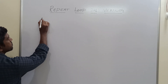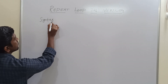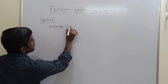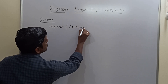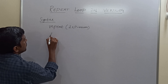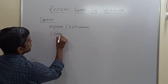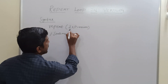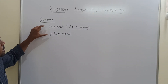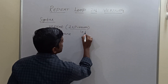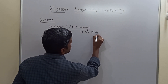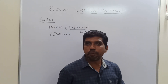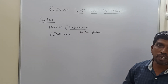First I will write the syntax. The syntax is: repeat (expression) then statement. Here, this expression represents the number of times to execute this loop. The repeat loop in Verilog will repeat the block of statements some defined number of times.